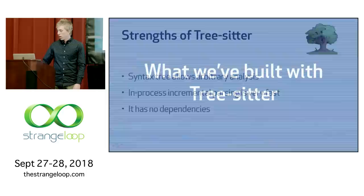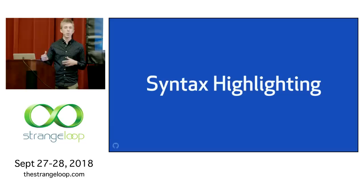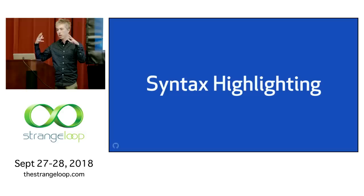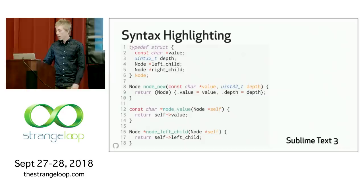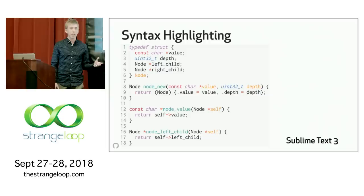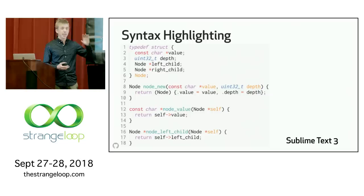Now I'll show you some of the things we're doing with TreeSitter today at GitHub. First, I'll show you what we've done with syntax highlighting. Syntax highlighting is super important because it's something most of us use pretty much all day while we're working, whether we're looking at code in our editor or on a website like GitHub.com or Stack Overflow. Most of the time syntax highlighting looks something like this screenshot from Sublime Text 3, which is pretty similar to most text editors or code websites. We're looking at some C code that defines a data type and some functions.